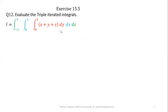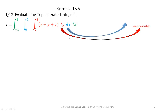Before starting the process of integration, we must know some terminologies and basic things about triple integrals. In triple integrals, the variable written on the innermost side is called the inner variable. The variable present in the middle is called the central variable, and the outermost variable is called the outer variable. We will always start integration with respect to the inner variable, then with respect to the central variable, and finally with respect to the outer variable.